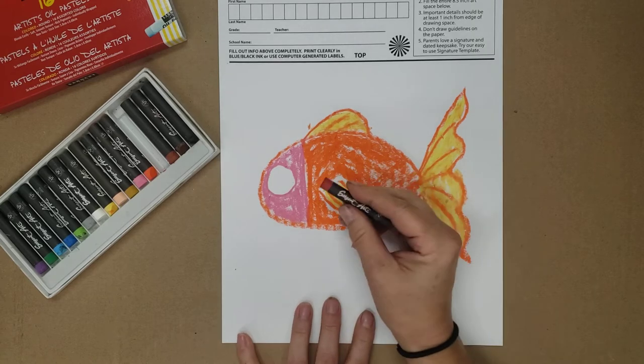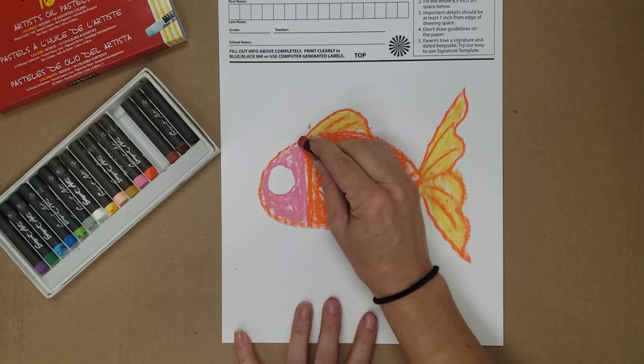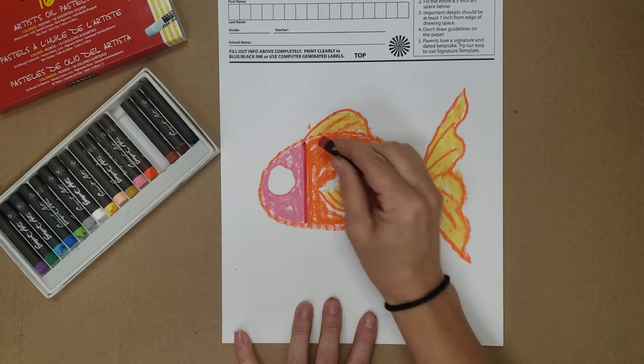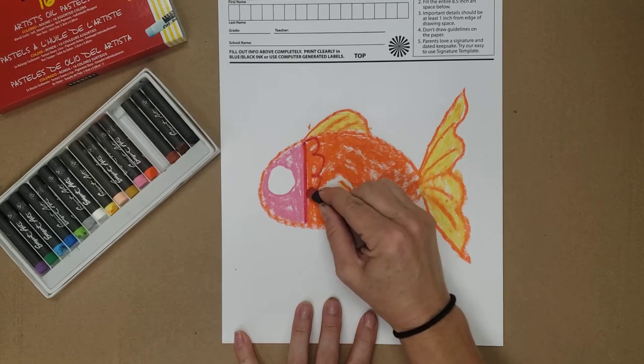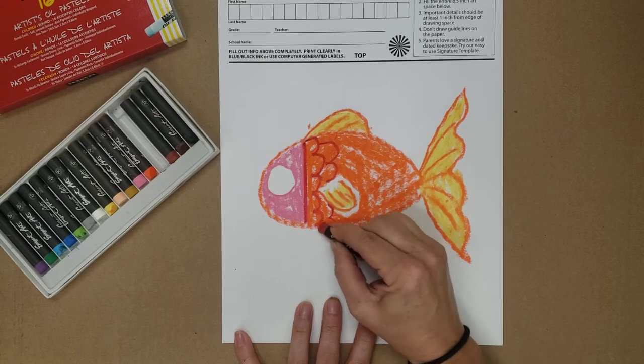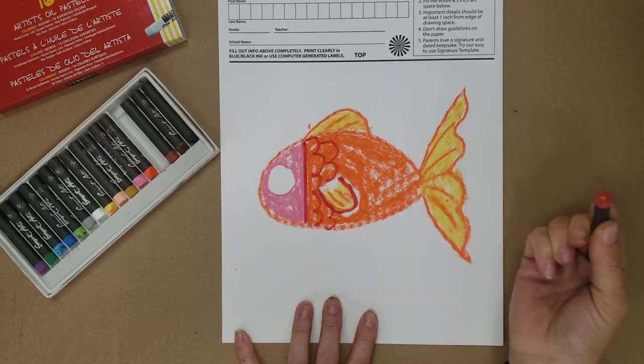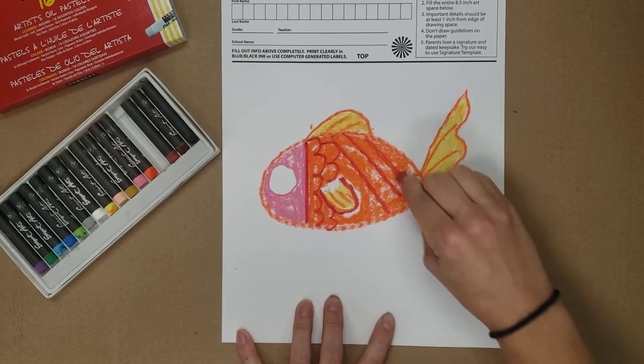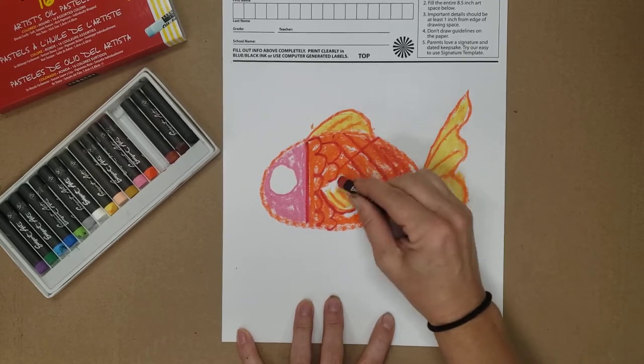I could make my lines like this where it's like scallops, like scales. I could also go back over my fin. I could decide to do diagonal lines, whatever way you decide. You can also try it on a different piece of paper first.